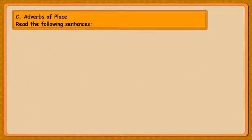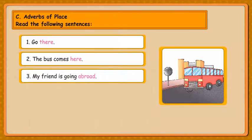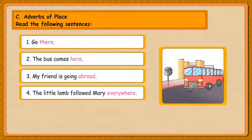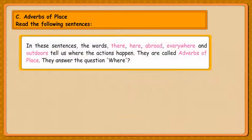C. Adverbs of Place. Read the following sentences. Go there. The bus comes here. My friend is going abroad. The little lamb followed Mary everywhere. The boys are going outdoors to play.